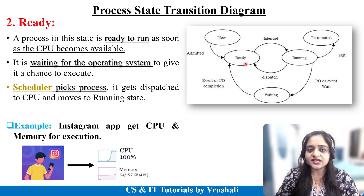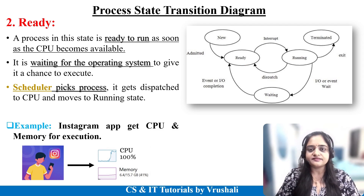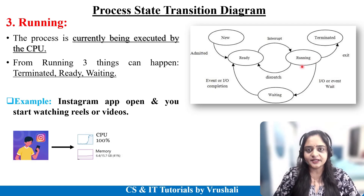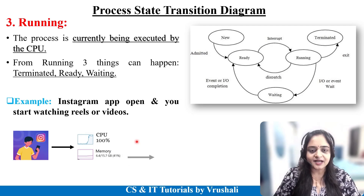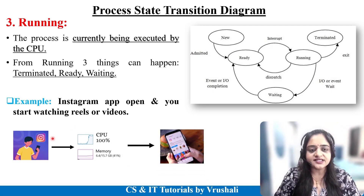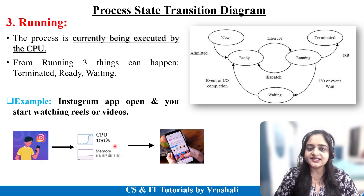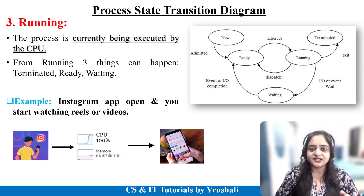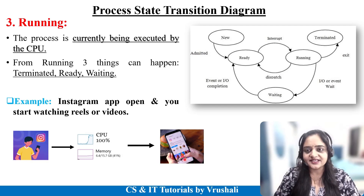The scheduler picks your process from the ready state and moves it to the running state. In the running state, your process is actually executed by the CPU. When you click on the Instagram app, after getting CPU and memory, in the running state you are actually watching reels, videos, and images on Instagram. This is called the running state.